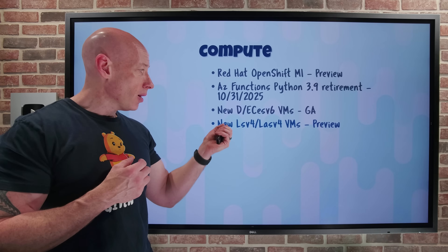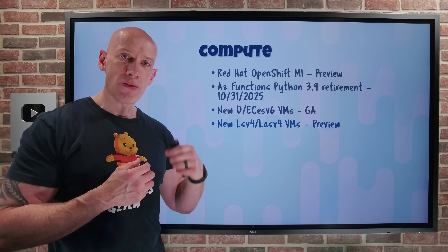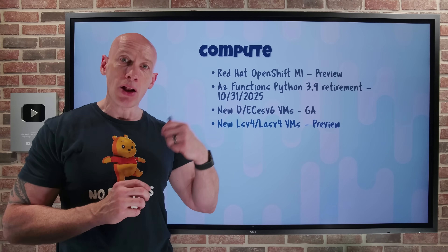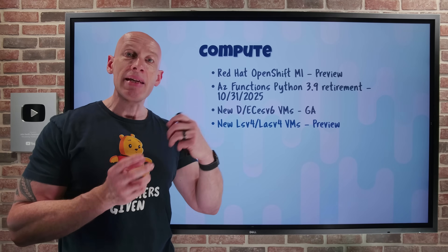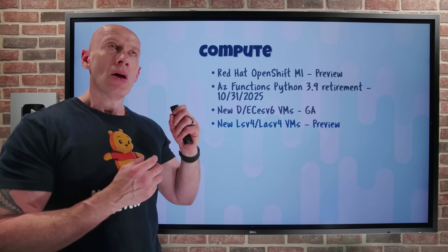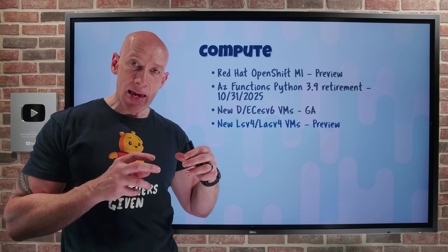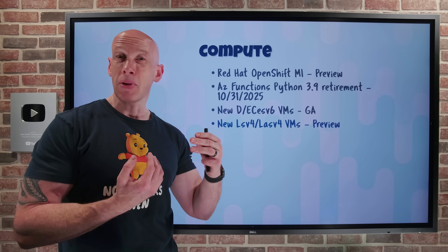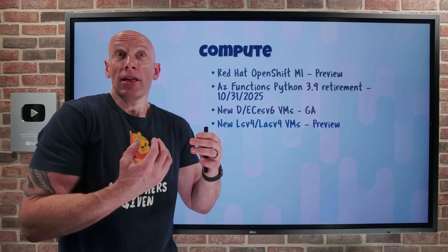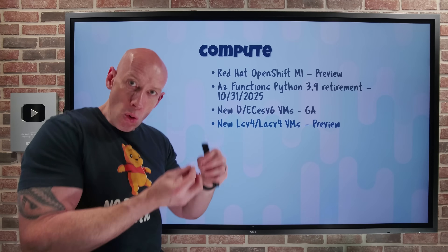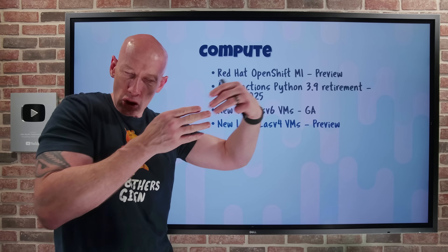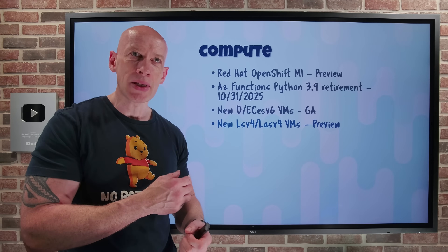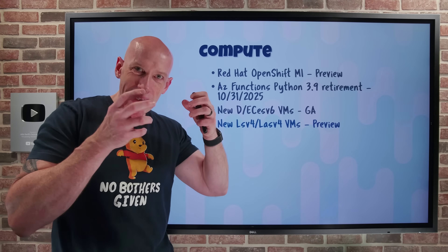Also new are the L and LA V4 series of virtual machines — the storage-optimized VMs. When there's no 'A', it's Intel-based on the Emerald Rapids; the 'A' suffix means it's the AMD EPYC version. The big deal here is they all have local NVMe-connected SSDs, which is super low latency. Very commonly you'd use that as some kind of cache, or even host the workload directly on it, with multiple L-series VMs replicating to each other for durability — while still keeping a persistent copy in a managed disk or blob.